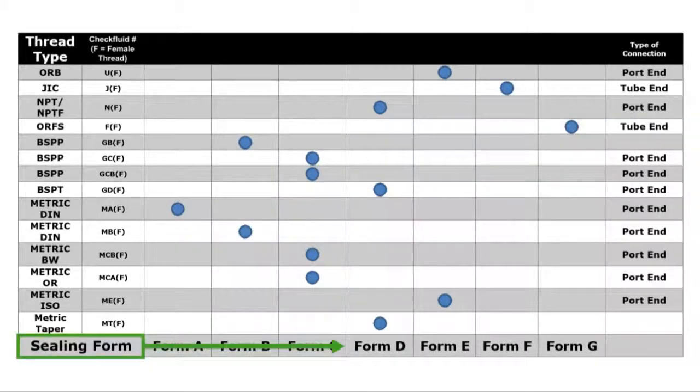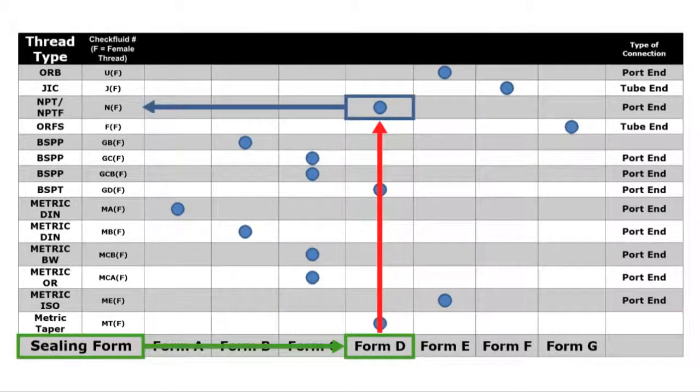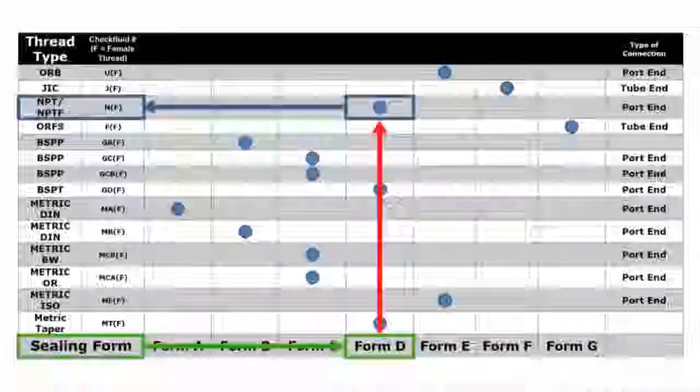Step 3: continue to the sealing forms chart. Locate your sealing form on the chart and find the Check Fluid ID number that is associated with it.